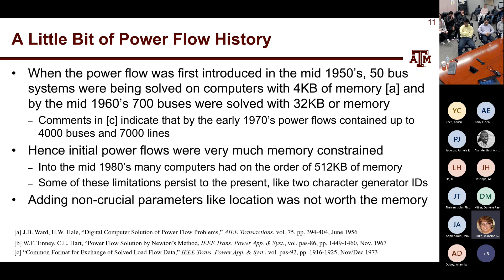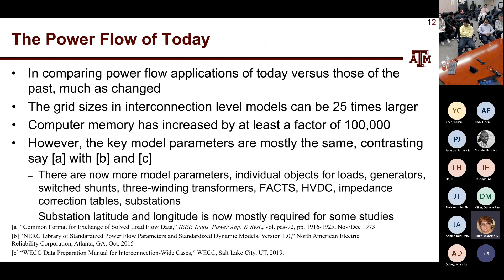We still see some of those early limitations — like two-character generator IDs, which we haven't changed. The grid interconnection sizes are maybe 25 times bigger than the models I used when I started doing power flows in the 1980s, but computer memory has increased by 100,000 times. So we have a lot of memory now. We've added switch shunts, individual objects for generators and loads, HVDC, impedance correction tables, and we've started adding latitude and longitude, which we can now assume is available.